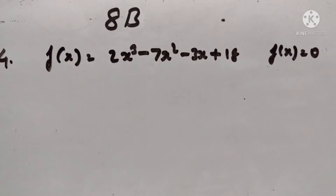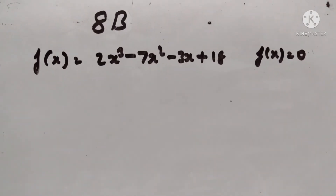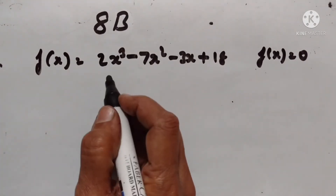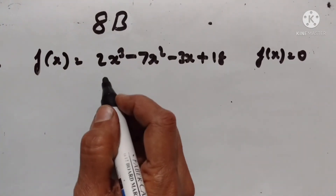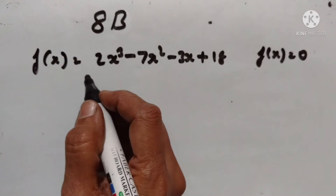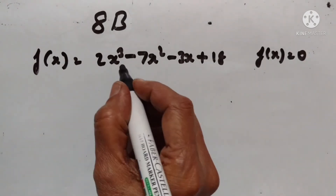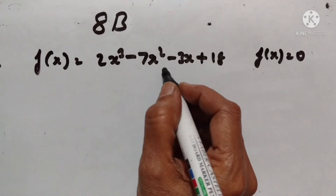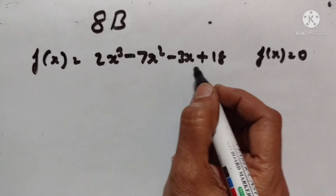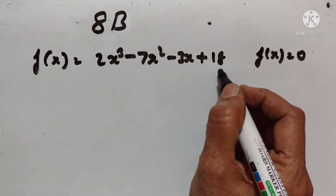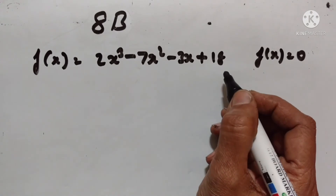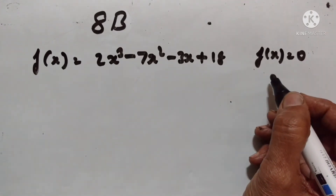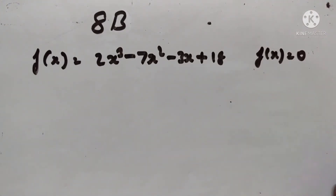Next problem. Factorize the expression f(x) = 2x³ - 7x² - 3x + 18. Hence, find all possible values of x for which f(x) = 0.